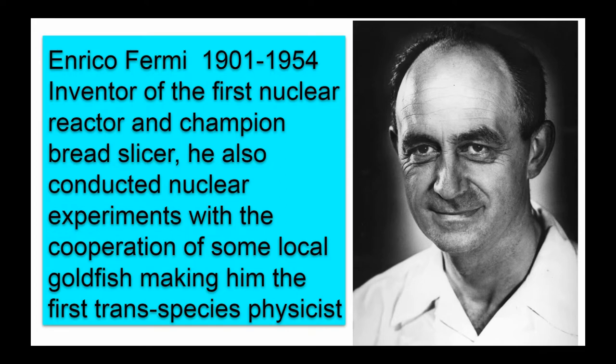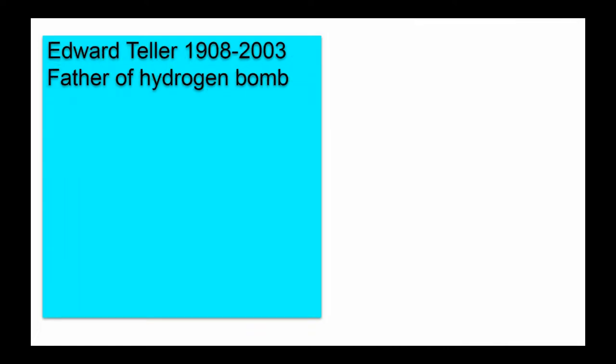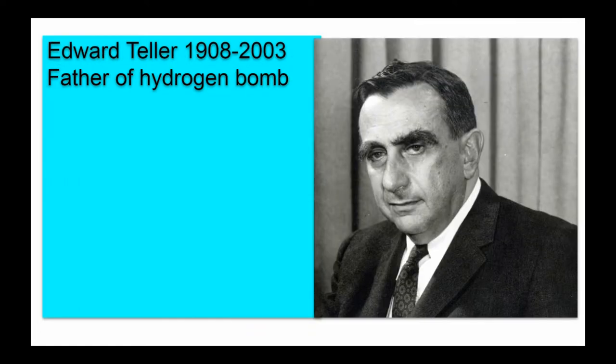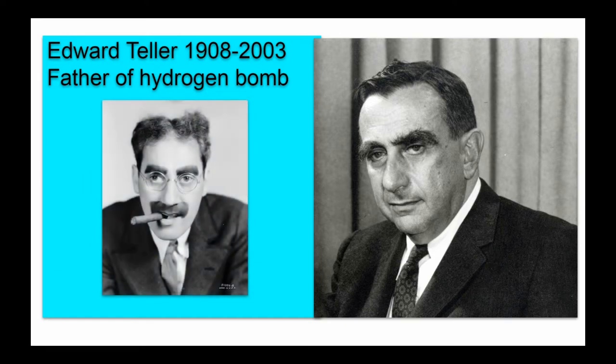Enrico Fermi, of course, is the brilliant physicist who was behind the first controlled nuclear reaction. He was a champion bread slicer, and he also conducted nuclear experiments with the cooperation of some local goldfish, making him the first trans-species physicist. Edward Teller, the father of the hydrogen bomb, was of course a man with the attitude of, if I have a hammer, everything looks like a nail. He recommended hydrogen bombs for everything. Little known about him was he was the inheritor in trust of Groucho Marx's eyebrows.